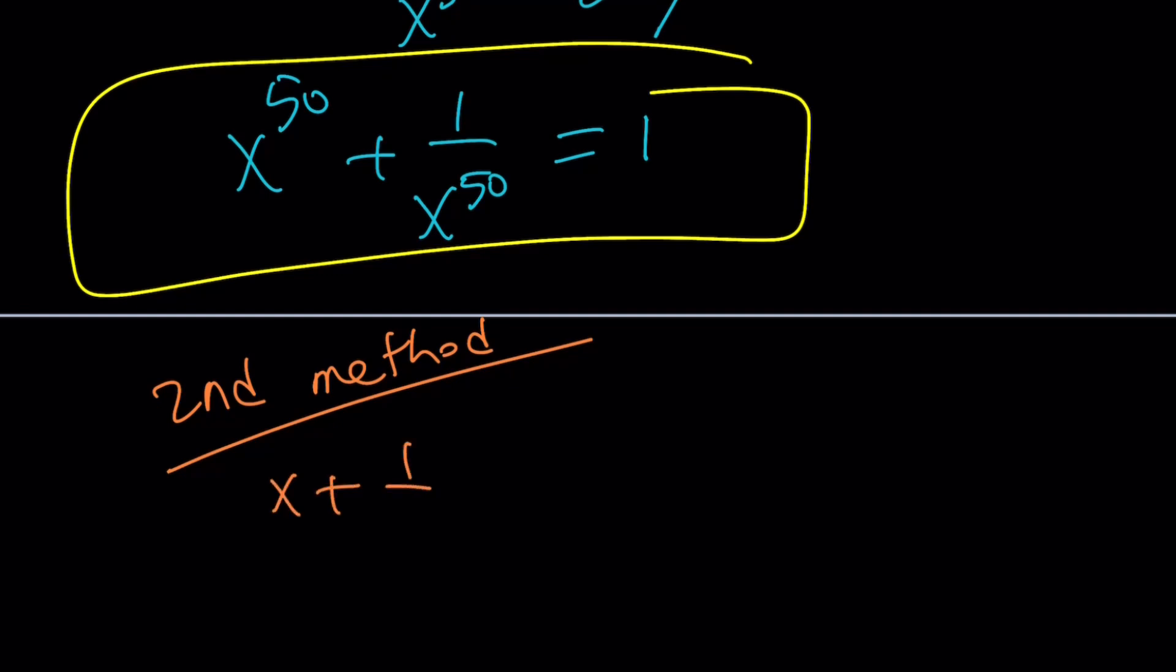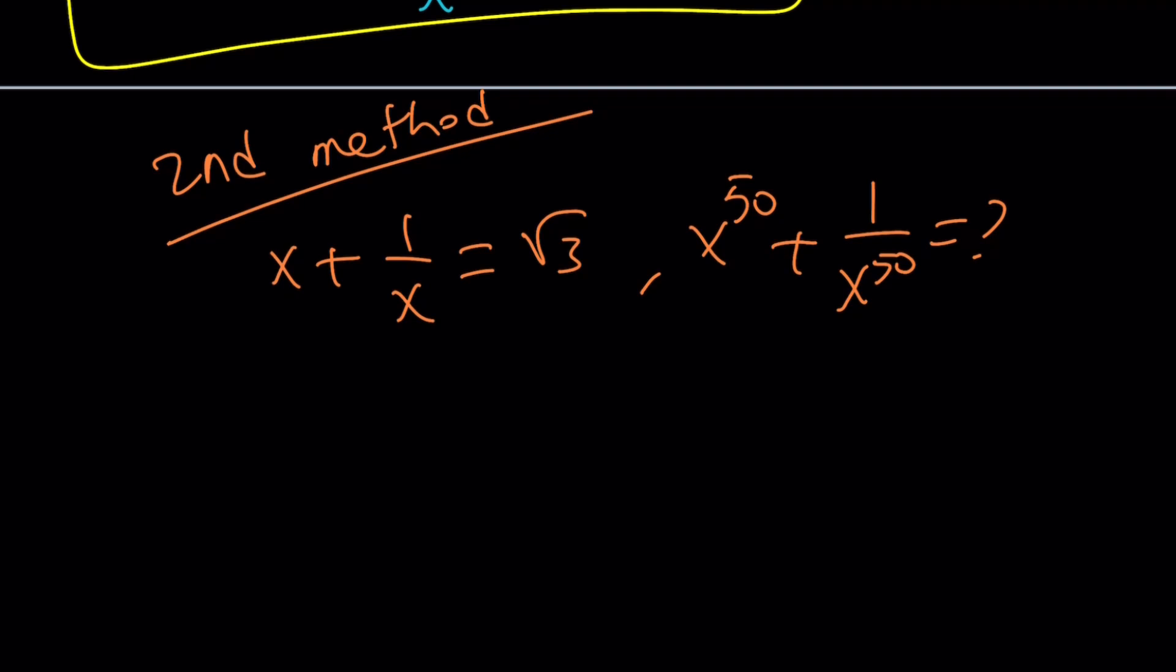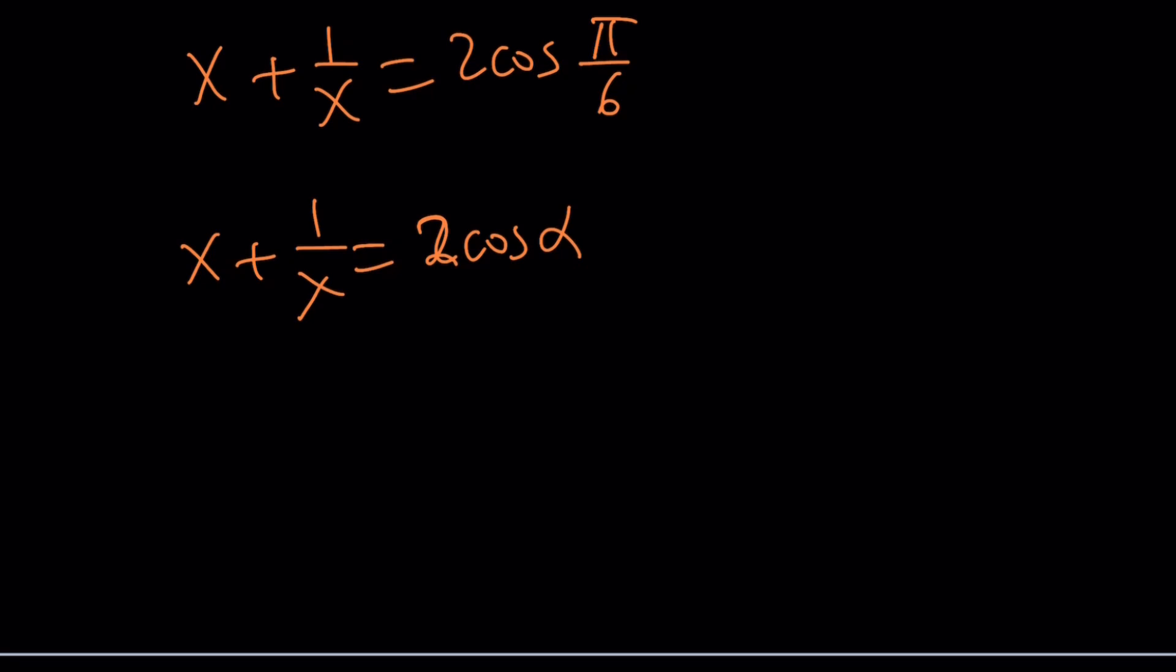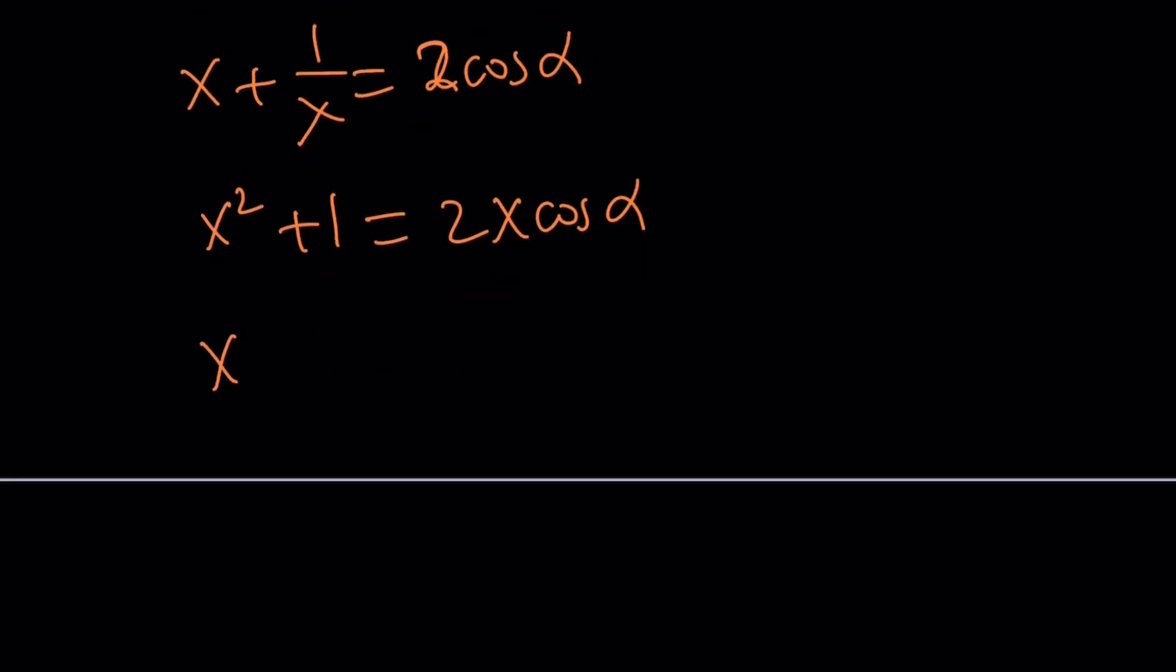Let me write the original problem. Now we're supposed to evaluate this sum of 50th powers. If I can generalize this, that would be great. And this is how I can generalize it. Root 3 is not a random number. It is actually 2 times the cosine of an angle. It is 2 cosine of what? What is cosine 30, which is pi over 6, right? So now to generalize this, I can do the following. If I have this equation, I can write it as follows.